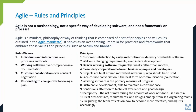Starting with a little history on agile: back in 2001, a group of folks with various software development backgrounds met and discussed the different software development practices at the time, like extreme programming, feature driven development, and others. They came up with what is known as the agile manifesto. They realized there were overarching values related to how people should collaborate internally and externally within an organization — not just to develop better software, but to actually help each other develop better software.